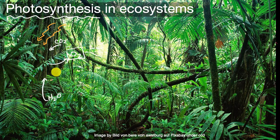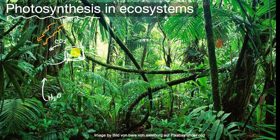Animals like you and me get our energy by eating these plants. How do we unlock that energy? That's where oxygen is really useful. By breathing oxygen, we can essentially do photosynthesis in reverse — we can break down this matter, these sugars that we're getting from plants.